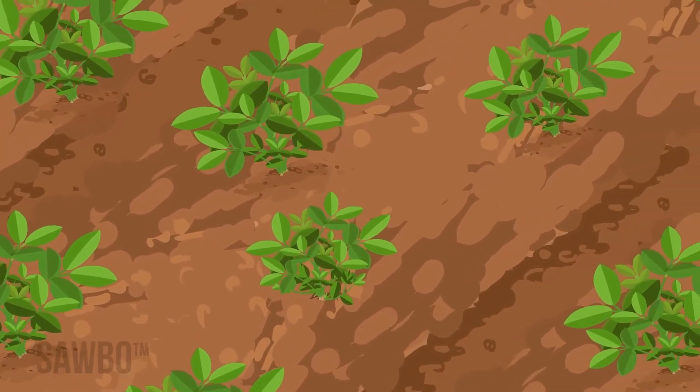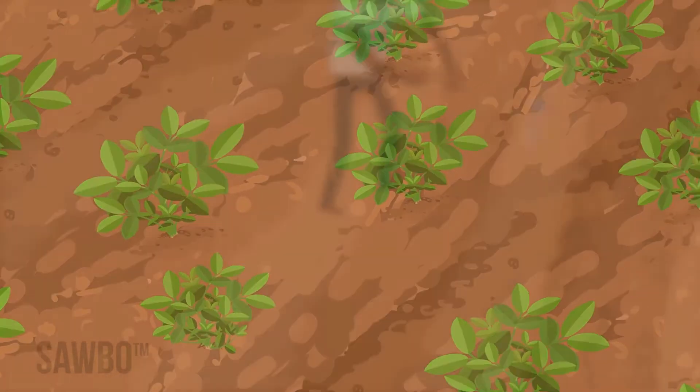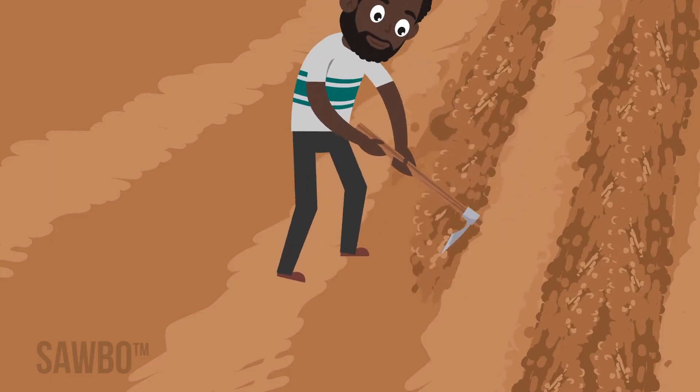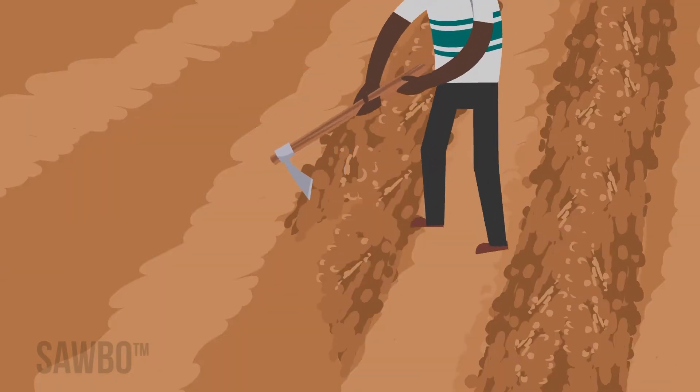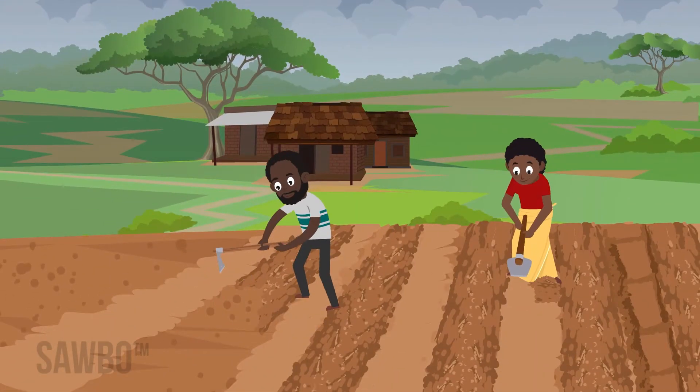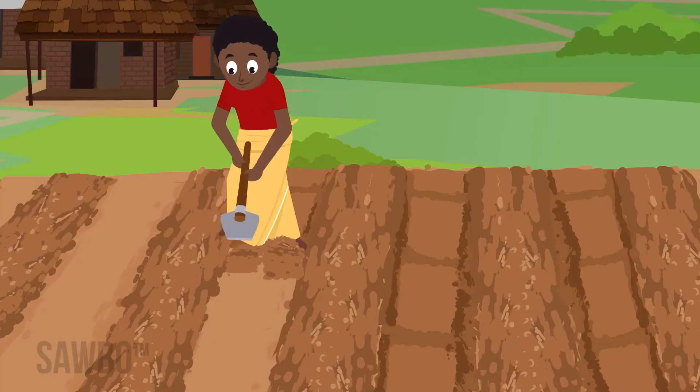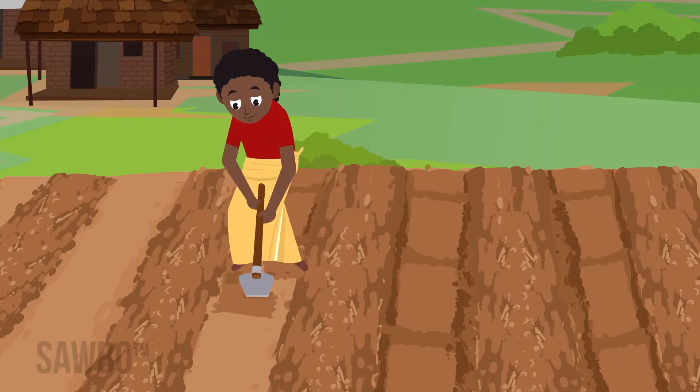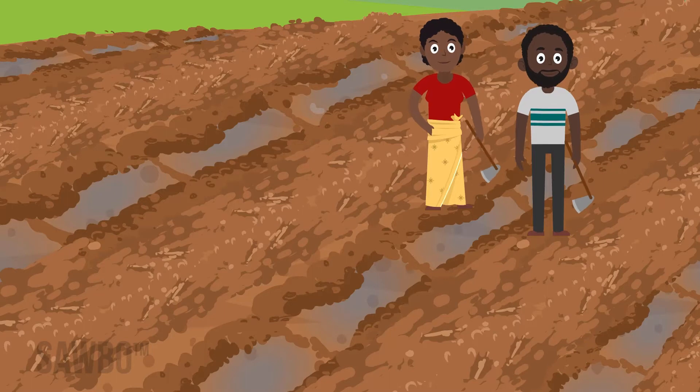Prepare your soil before the rains begin so that you can plant on time. Some farmers wait to plant groundnut until after other crops like maize, but planting with the early rains brings the highest yield and best quality groundnut. When the rains begin, you want to be ready to plant.